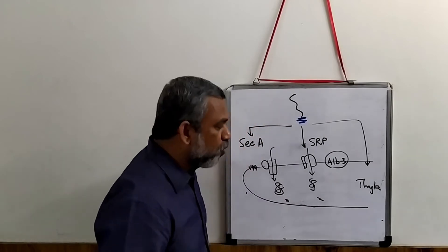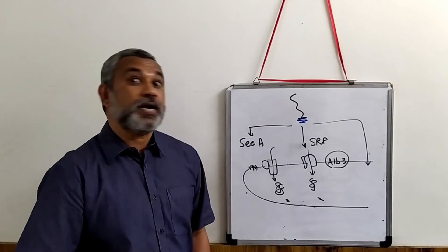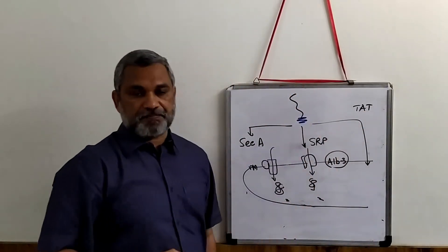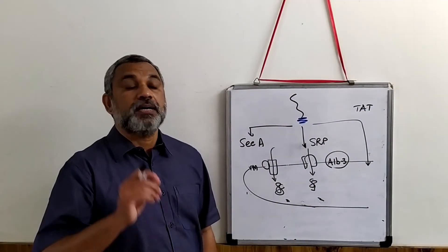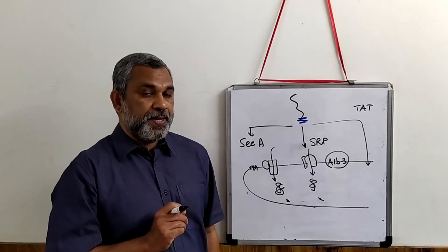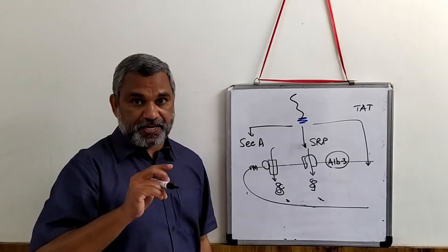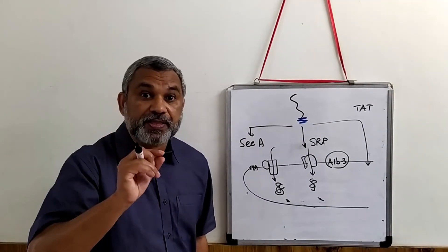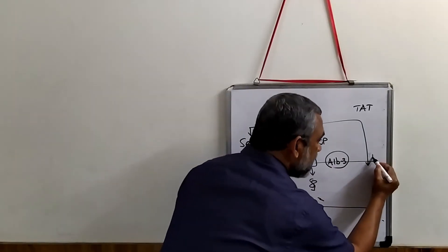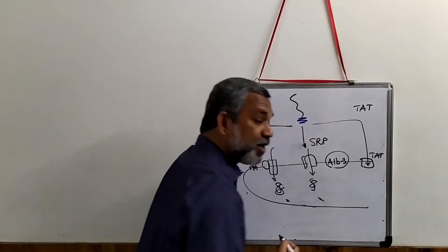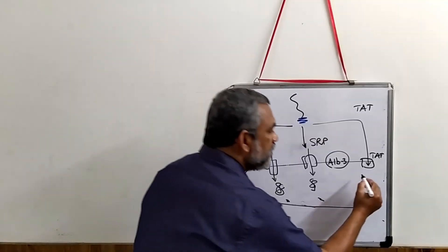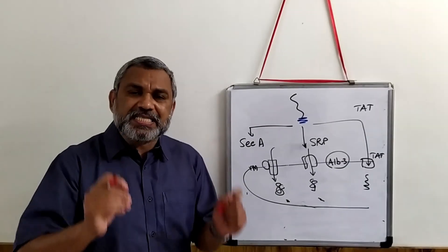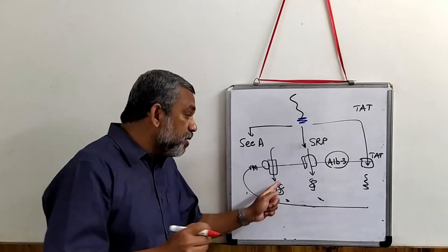The third mechanism for transporting a protein into the thylakoid is what is called the TAT mechanism. TAT stands for Twin Arginine Translocation. There are two arginine residues present at the signal site, and these arginine residues ensure that the protein uses the TAT mechanism. A translocation complex identifies these arginine residues and the protein is brought inside.